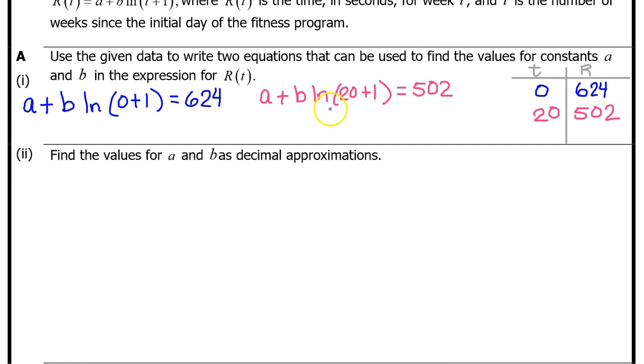Part A(ii). Find the values for a and b as decimal approximations. Let's start with the blue equation. We have a + b ln(1) = 624. We have memorized that the natural log of 1 is 0. So this term is equal to 0, and we are left with A = 624.